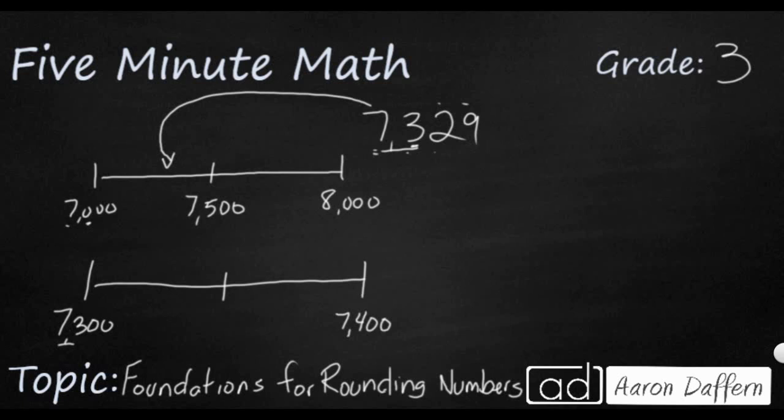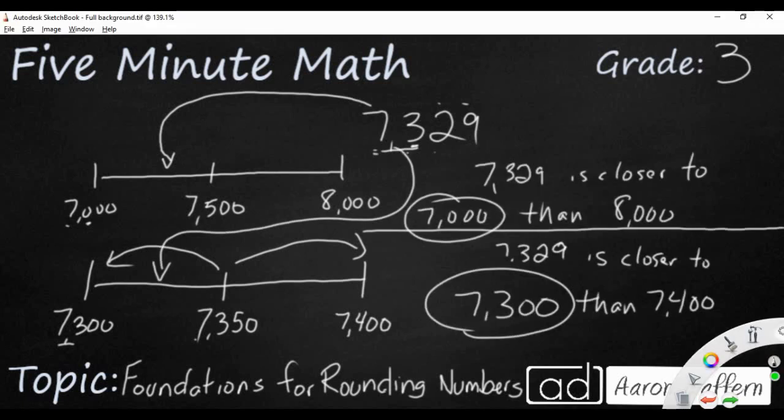And instead of being 500, since I'm going to the 100s place, half of 100 is going to be 50. So now I'm looking at 7,350. Anything above that is going to go up. Anything below that is going to go down. And I've got 7,329. So this 329 is going to fall right around here. Depending on the place you're rounding to, it's closer to either 7,000 or 7,300.